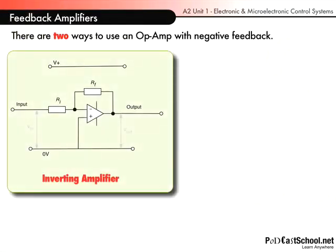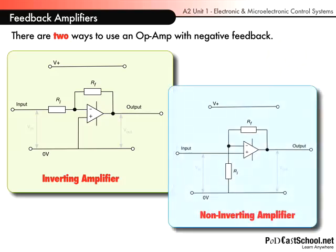There are two ways to do this. There's something called the inverting amplifier, where the input is fed into the inverting input, and we have two resistors: one called RF, the feedback resistor, connecting between the output and the inverting input, and an input resistor RI. We also have a non-inverting amplifier, which is quite different. Its feedback resistor is also connected between the output and the inverting input, but the input itself goes into the non-inverting input. If we looked at the output of the inverting amplifier, we would see it was actually reversed in polarity to the input, whereas the non-inverting amplifier does not do that.